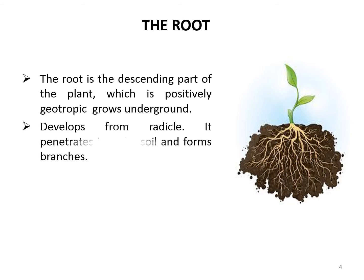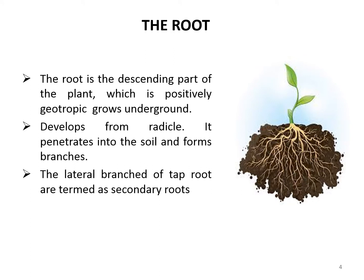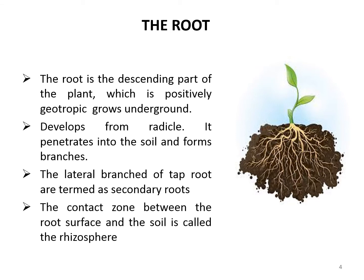Root is actually a descending part of the plant which is positively geotropic, hence it grows downward into the soil. The roots develop from the radical and grow in the absence of light. The roots consist of the main axis and the tap root. The lateral branches of tap root are termed as secondary roots, and secondary roots further give rise to lateral branches termed as tertiary roots. Many roots have a relationship with bacteria and fungus in the rhizosphere, which is the soil zone near the root, or the contact zone between the root surface and the soil.